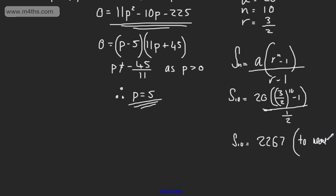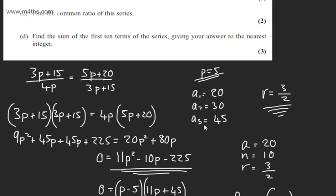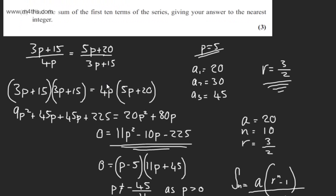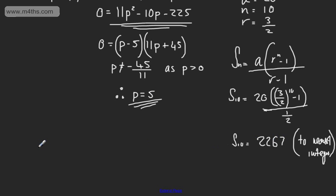If you want to write the calculator display and then round, that might be advisable. We're asked to give this to the nearest integer. The nearest integer is 2267.